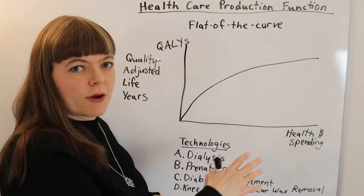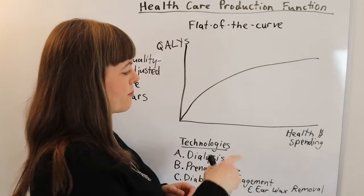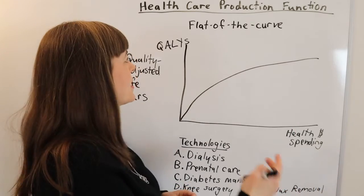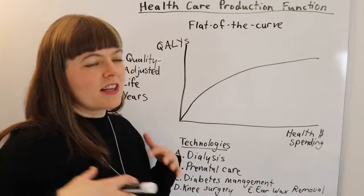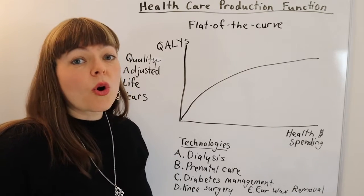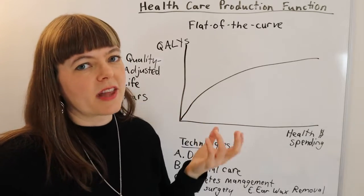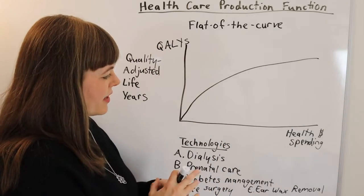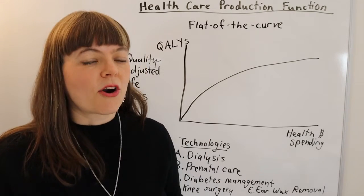This comes from the healthcare production function — I have another video on that which I'll link to below. The key is we have health spending on the x-axis, that's all health spending in the system, and we've got quality adjusted life years on the y-axis, which is basically how many years the healthcare system adds to the average person's lifespan, or how much pain reduction in that lifespan is translated into years of life. That's quality adjusted life years — it's a measure of health — and we're thinking about all of the technology that we integrate into our healthcare system.